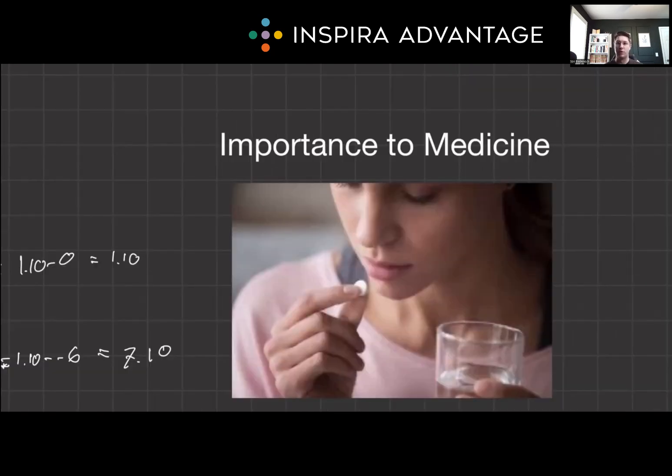For the MCAT, mastering the Nernst equation is vital. It not only appears in electrochemistry questions, but also in biological scenarios, where ion gradients across membranes influence cell behavior, particularly across neurons. In medicine, this understanding is crucial for interpreting how drugs affect ion balances in the body.